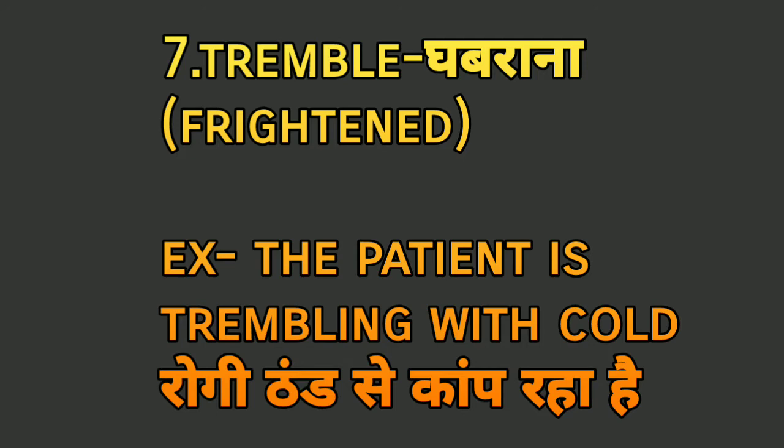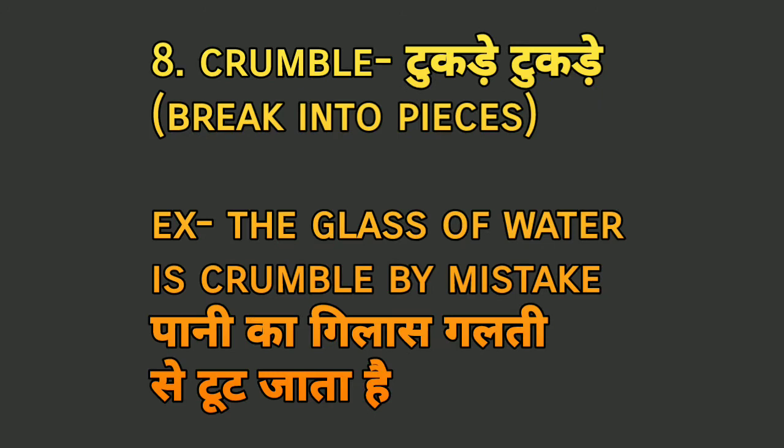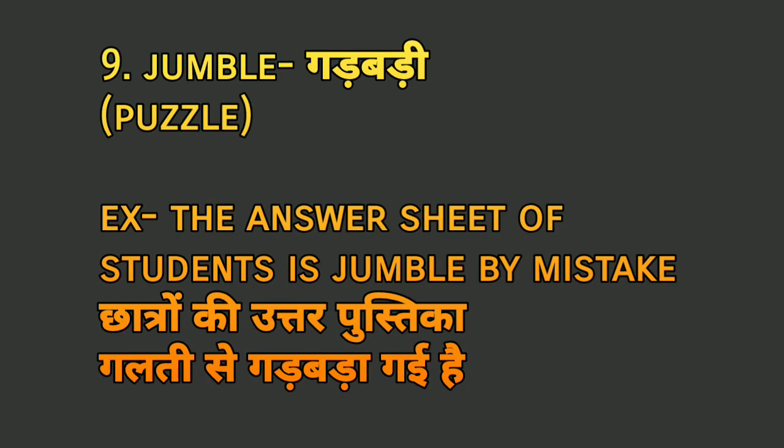'Crumble' means 'tukde tukde' — to break into pieces. For example: 'The glass of water crumbled by mistake' — paani ka glass galti se toot gaya. The next word is 'jumbled', meaning 'gadbad' — puzzled or mixed up. For example: 'The answer sheet of students is jumbled by mistake' — chhatron ki uttar pustika galti se gadbad ho gayi.